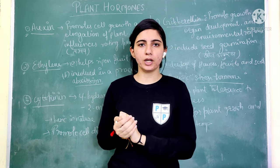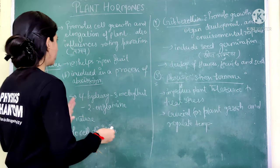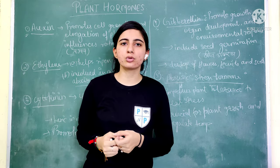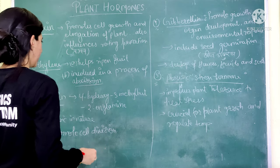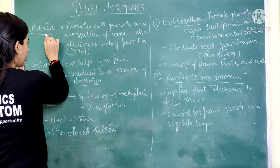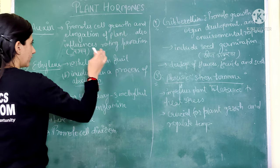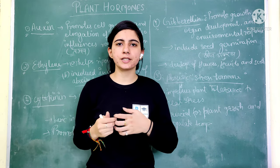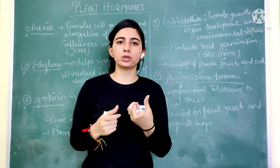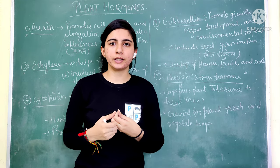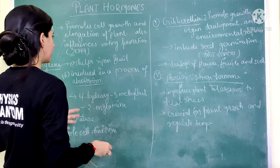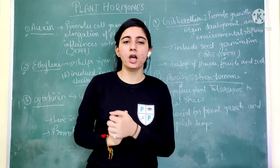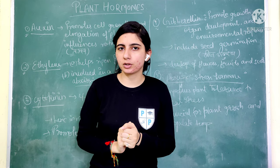The first hormone is Auxin. This hormone is very important for the growth of plants. It promotes cell growth and helps with the elongation of plants. You all know that plants grow upward toward sunlight — this upward growth is the elongation, and the most important hormone for this process is Auxin.